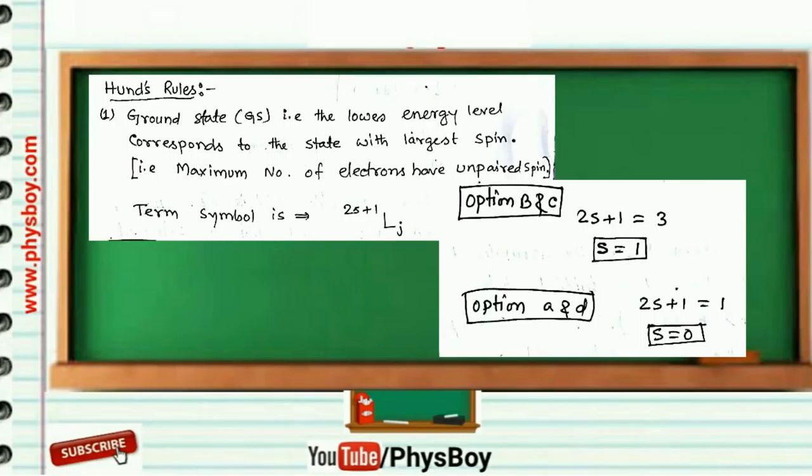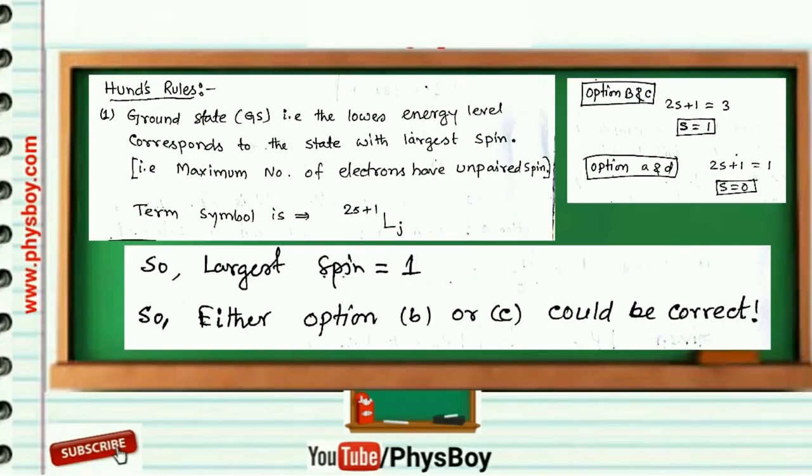And if you look at option A and D, 2S+1 equals 1, so S will become 0. So the two possible values of S are 0 and 1. The largest spin is 1, so either option B or C could be correct. So from these two options, we have to eliminate one of them.